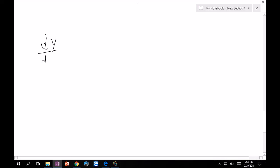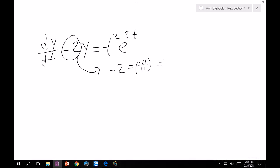t dy/dt minus 2y is equal to t squared e to the 2t. Now, I'll notice this minus 2 here and this means that minus 2 is equal to p(t), which means that Q(t) is equal to e to the integral minus 2 dt, which means that it's e to the minus 2t.